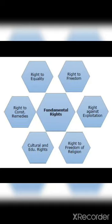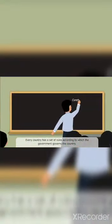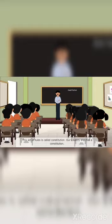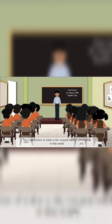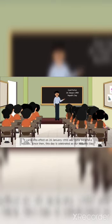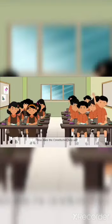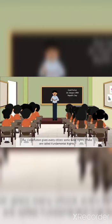In the next chapter we are going to learn about Right to Freedom of Religion, Cultural and Educational Rights, and Right to Constitutional Remedies. Every country has a set of rules according to which the government governs — this set of rules is called a Constitution. Dr. B.R. Ambedkar was the architect of the Constitution of India. The Constitution of India is the longest written constitution in the world. It came into effect on 26 January 1950 and India became a republic. Since then, this day is celebrated as Republic Day. A constitution gives every citizen some basic rights, called fundamental rights, for the well-being of citizens.